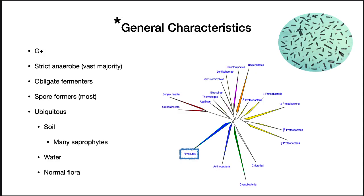The general characteristics of the genus are the following. These are gram-positive, strict anaerobes, for the most part obligate fermenters. They are spore formers in most cases. They are ubiquitous in soil, with many saprophytes that are harmless in the soil and just degrading things. You'll find them in water, and they're also part of the normal flora of many people.